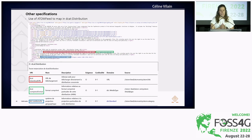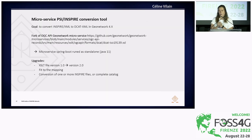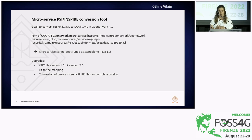To fill in the DCAT distribution class, we use the AtomFeed. The AtomFeed is the download service — there are some elements that are well-structured in the AtomFeed that you cannot find in the metadata reference file of the dataset or the service. For example, the coordinate reference system projection in blue is really described in that tag. We also want a tool to convert INSPIRE to DCAT in GeoNetwork version 4, so we forked a microservice that is available on GitHub. It's a microservice that runs as standalone, and we made some upgrades: the XSLT file is now in version 2, it fits our mapping, and we can convert one or more INSPIRE files or the complete catalog.